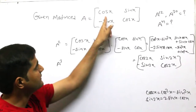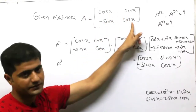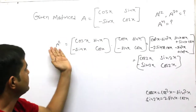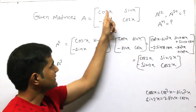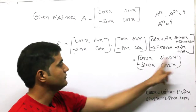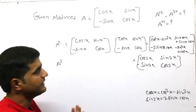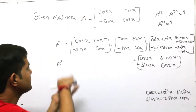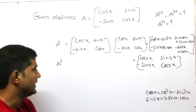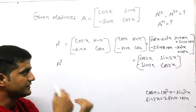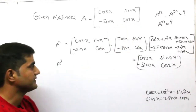Look at this pattern. When we talk about A power 1, we have cos 1x, sin 1x, minus sin 1x, cos 1x. And when we talk about A square, where x was multiplied by 1, now it is multiplied by 2. So we have a pattern here. We will verify this by computing A power 3. If A power 3 follows the same type of pattern, then we will take A power n to generalise the result.